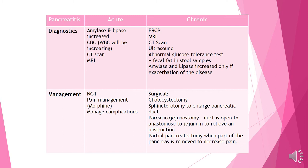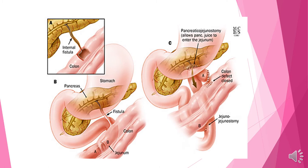There is surgical management for these patients. They can get a cholecystectomy if there is gallbladder or gallstone involvement. A sphincterotomy is a procedure used to enlarge the pancreatic duct if there are any blockages. The pancreaticojejunostomy (PJJ) is when the duct is opened and anastomosed to the jejunum to relieve obstructions. They can also have a partial pancreatectomy where part of the pancreas is removed to help decrease pain. Diagrams show fistulas attached to the colon, the pancreas relative to the stomach, and the PJJ where pancreatic juice can enter the jejunum through surgical intervention.